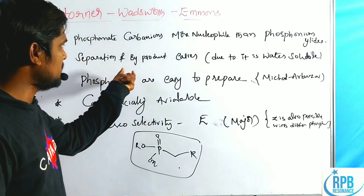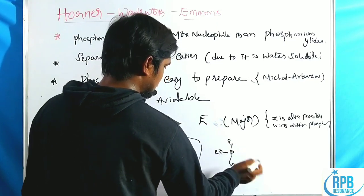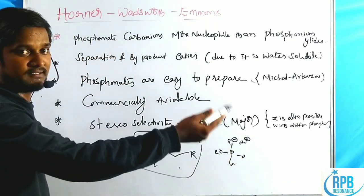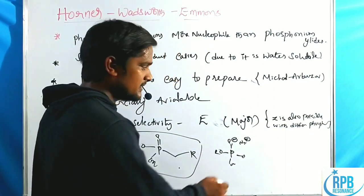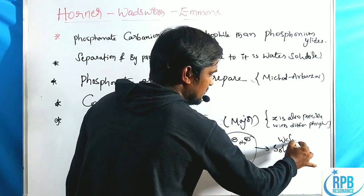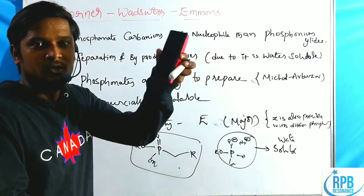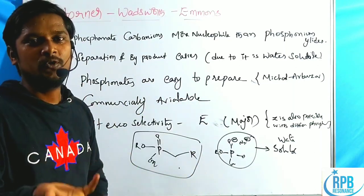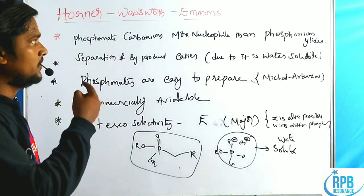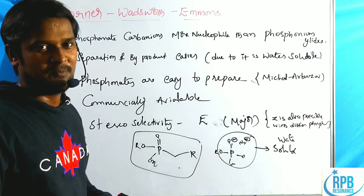The second advantage concerns the separation of the byproduct. In this reaction, we get a byproduct containing O-Na+ — that is a salt. This salt is easily soluble in water, it is a water-soluble salt. When the reaction mixture is poured into water, the salt dissolves and we get the pure crystalline precipitate of our alkene product. That is a major advantage of the HWE reaction.